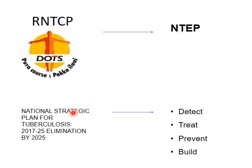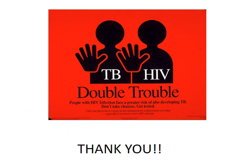The RNTCP has now been renamed as the National Tuberculosis Elimination Program (NTEP), under which the National Strategic Plan for Tuberculosis Elimination works on four aspects: detect the cases, treat the cases, prevent the susceptible population, and build and strengthen the policies. I would like to end the session with the term 'double trouble' — people having tuberculosis are at a higher risk of developing HIV and vice versa. Thank you.